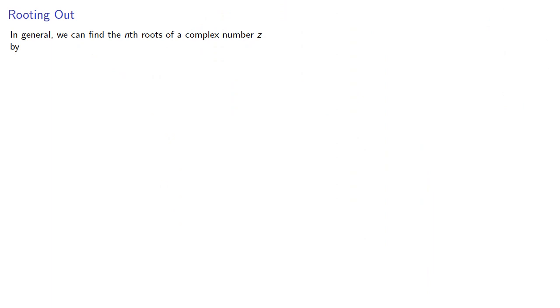In general, we can find the nth roots of a complex number z by writing z in trigonometric form as r cis(θ + 2πk), and then computing nth root of r cis(θ/n + 2πk/n).